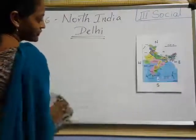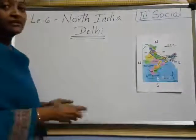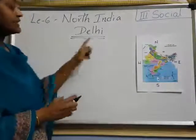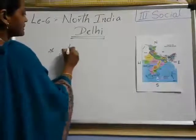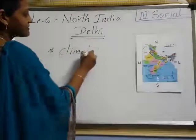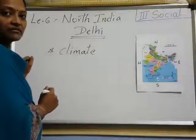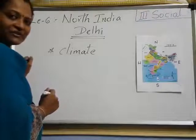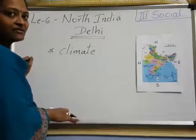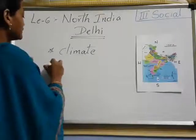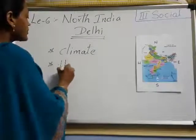First, look here — about Delhi, we are going to learn today. First one is about climate. Climate means do you know? The weather — the temperature of a particular place. About climate and its historical importance.